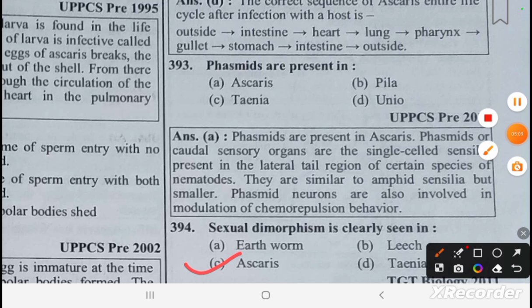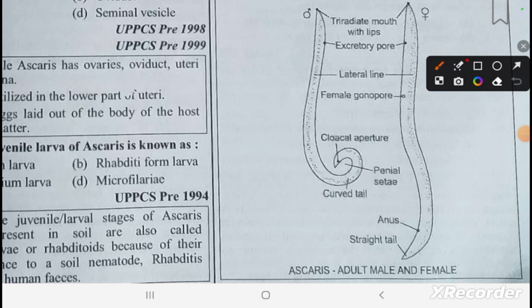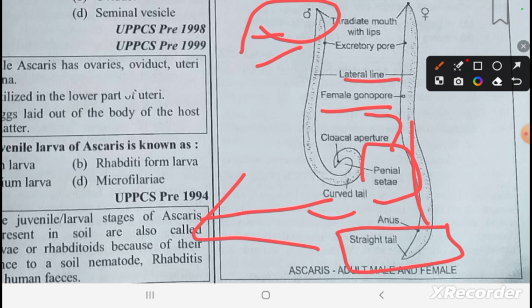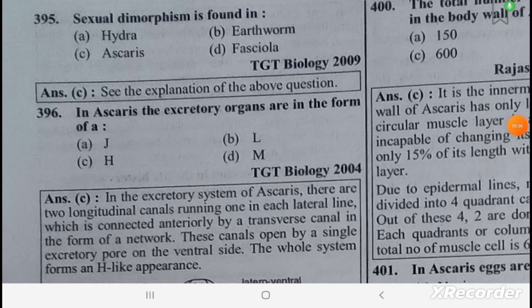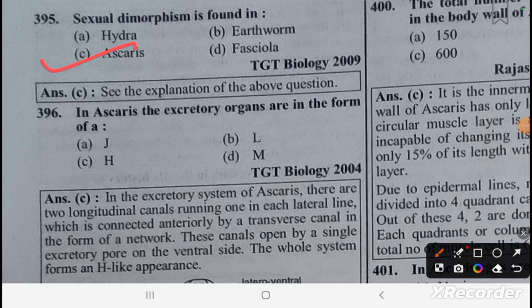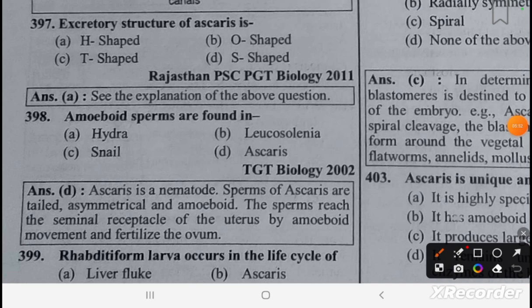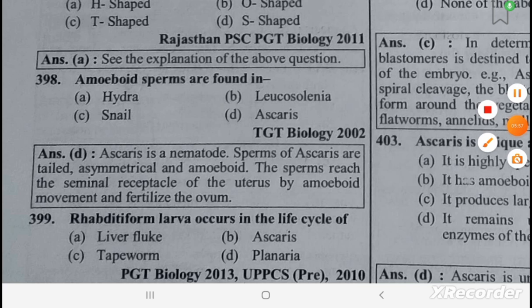A comparison of male and female Ascaris is given. Features include the tri-radiate mouth with lips, excretory pore, lateral line, female gonophore, cloacal aperture, and penial spicules. The curved tail is a feature of the male, while the straight tail belongs to the female. Sexual dimorphism is clearly seen in Ascaris. The excretory organs of Ascaris have an H-shaped (edge-like) appearance, and amoeboid sperms are found in Ascaris.